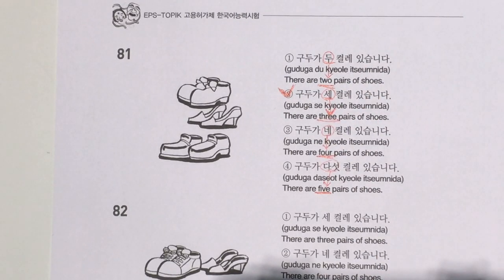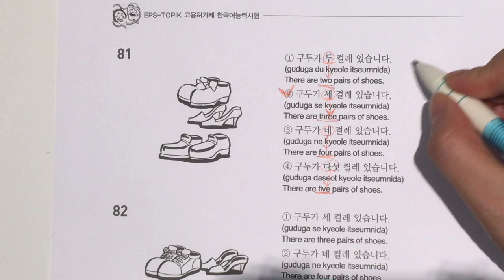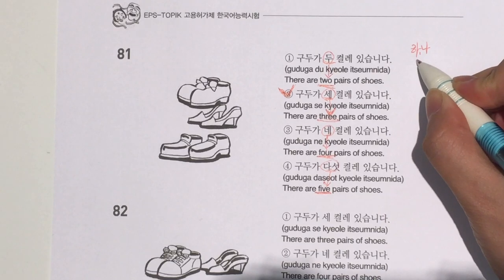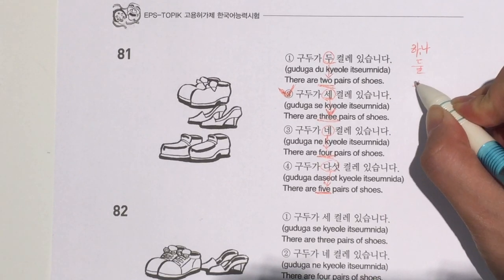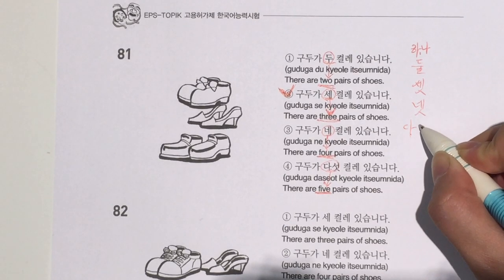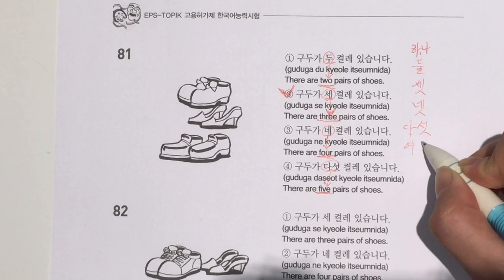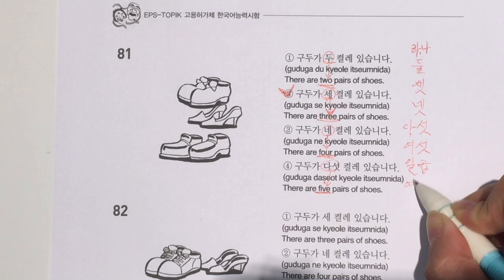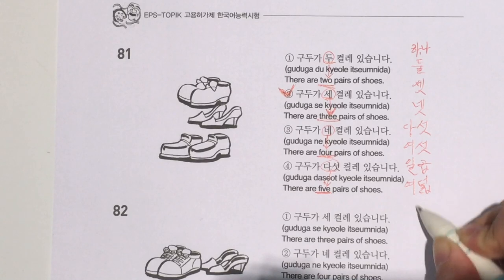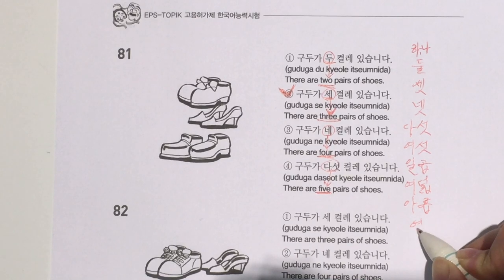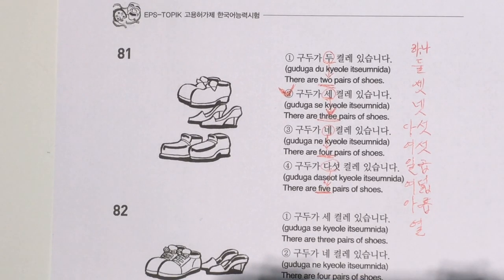In Korean, we have two ways of saying numbers. The first way is: 하나, 둘, 셋, 넷, 다섯, 여섯, 일곱, 여덟, 아홉, 열. This is one way to say numbers.